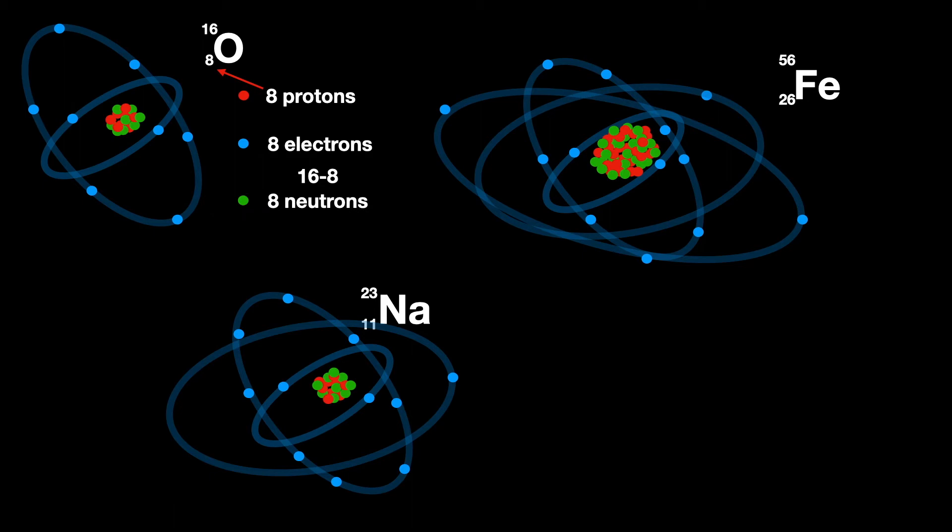Moving on to the second example, Na, which is sodium. The bottom number is 11, the proton number. It has 11 protons. It must also have 11 electrons. The total mass of 23 minus the mass of the 11 protons we already have means it has 12 neutrons.